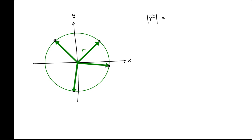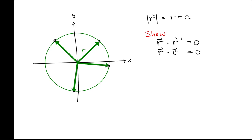Let's indicate that position vector of constant magnitude r with the variable c to remind us that it's a constant. Our goal is to show that the dot product between the position vector and its derivative is equal to zero. The derivative of a position vector is called the velocity of that position vector, so we are trying to show that for a position vector of constant magnitude, the velocity vector dotted with it equals zero.